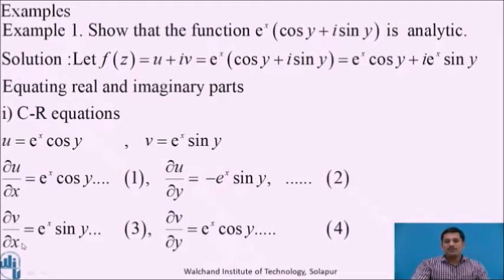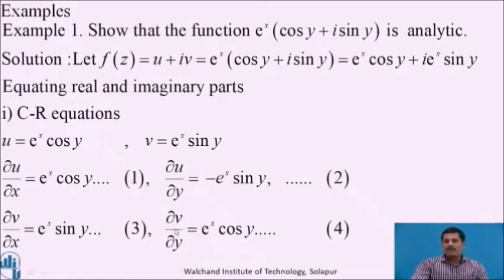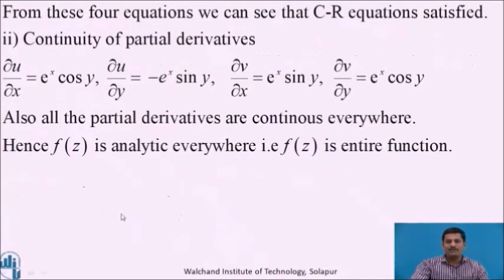Similarly, differentiating v partially with respect to x, we get ∂v/∂x = e^x sin y, and differentiating v partially with respect to y, treating x constant, we get ∂v/∂y = e^x cos y. From these four derivatives, we can see that ∂u/∂x = ∂v/∂y and ∂u/∂y = −∂v/∂x. Therefore, the Cauchy-Riemann equations are satisfied.